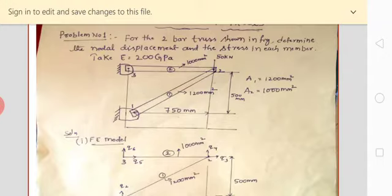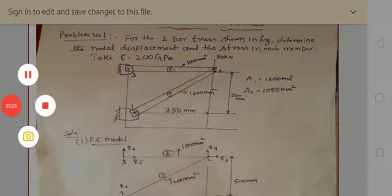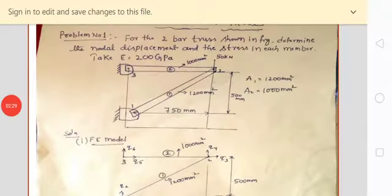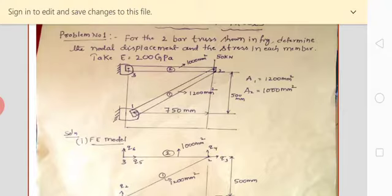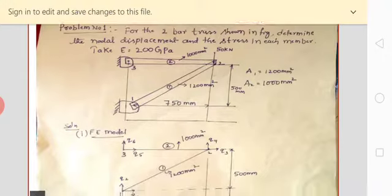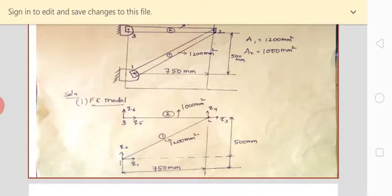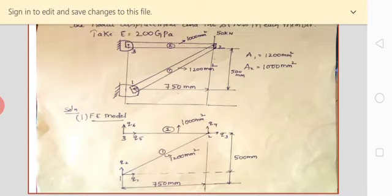The area of the first element and also the area of the second element are given — that is 1200 mm² and 1000 mm² respectively. Now let us solve this problem step by step. Whenever going for analysis of trusses in FEA, the first thing you have to do is convert that physical problem into a finite element model. That is the first step.